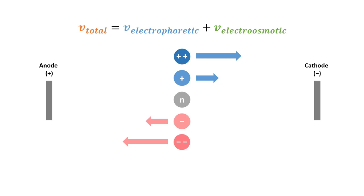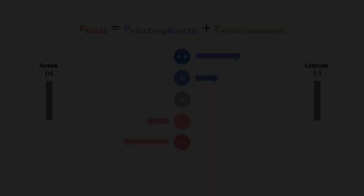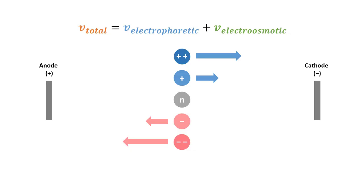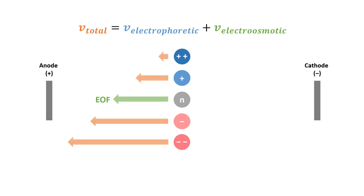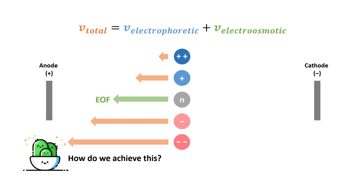The reason why cations migrate faster compared to the anions is because the cations are attracted towards the same direction as the electro-osmotic flow. Therefore, in order to allow the anions to be eluted first, we need to reverse the electro-osmotic flow. And when we reverse the electro-osmotic flow, the bulk solution will be moving towards the anode instead of the cathode.